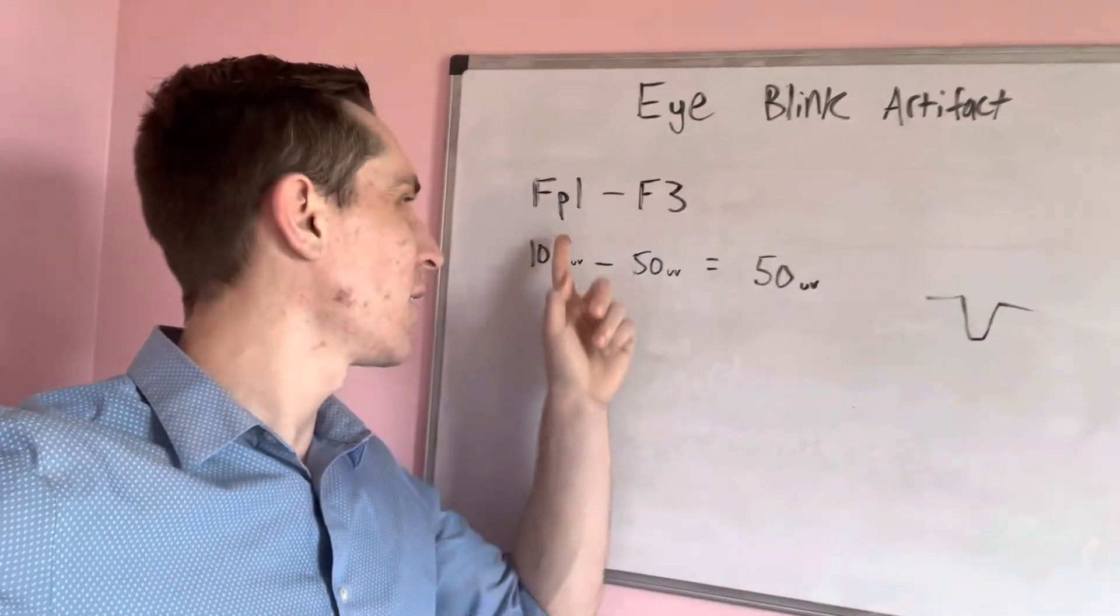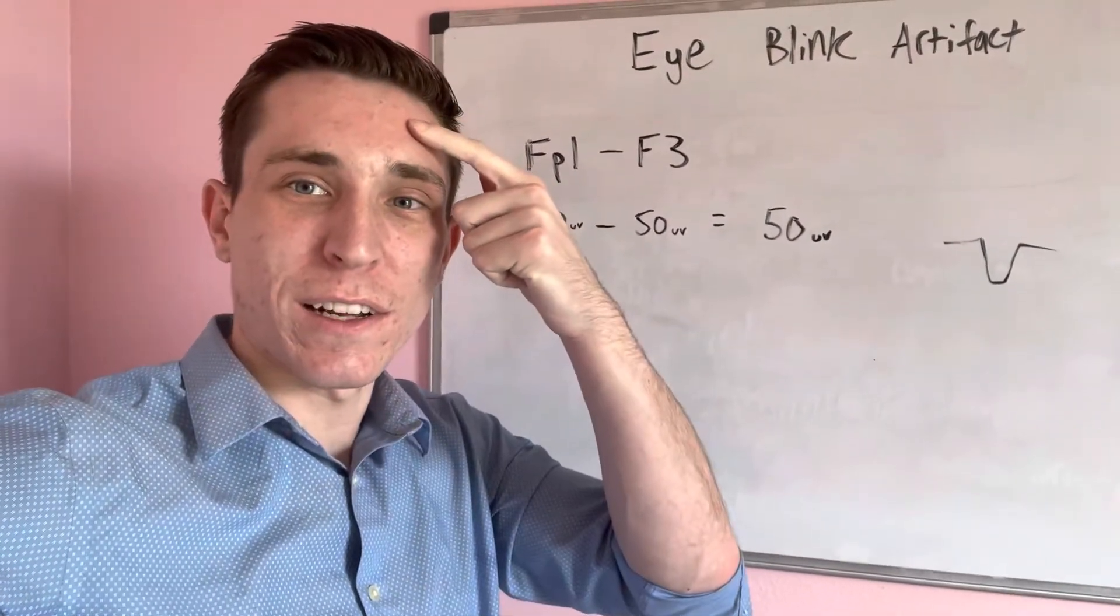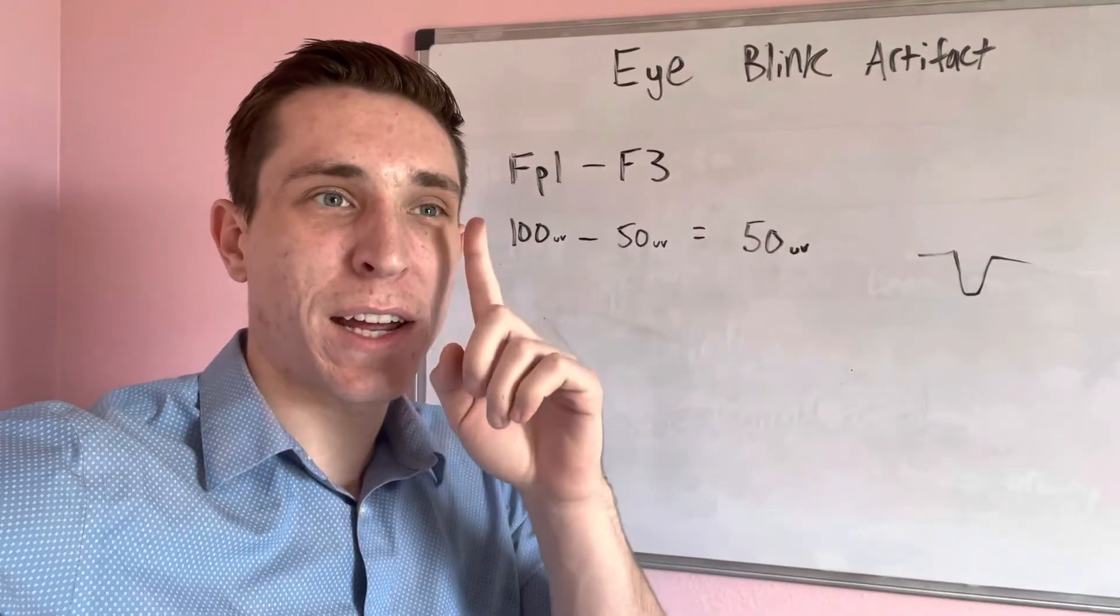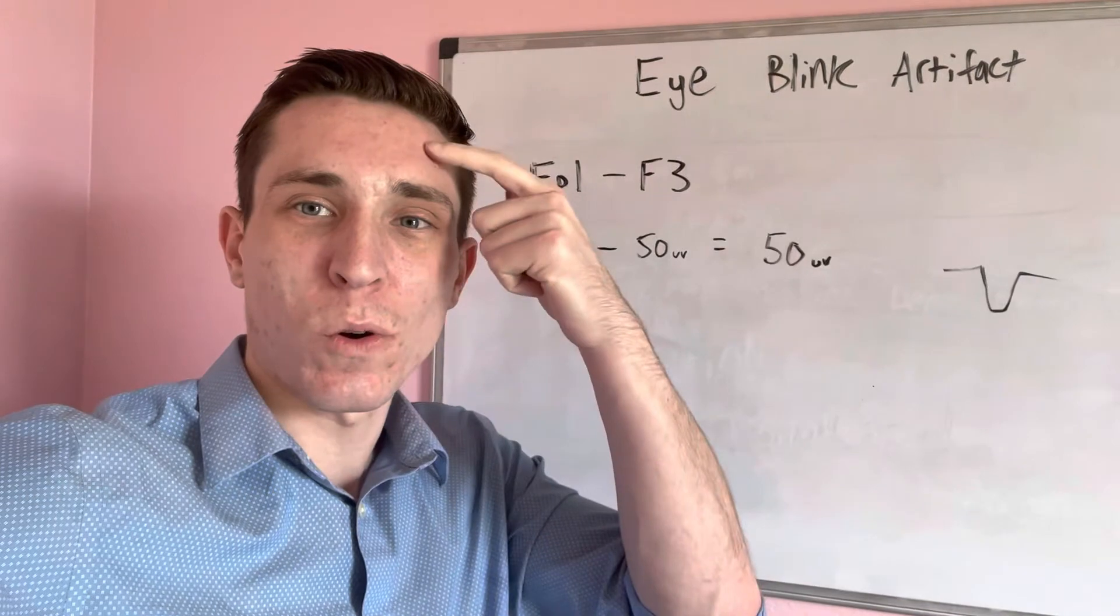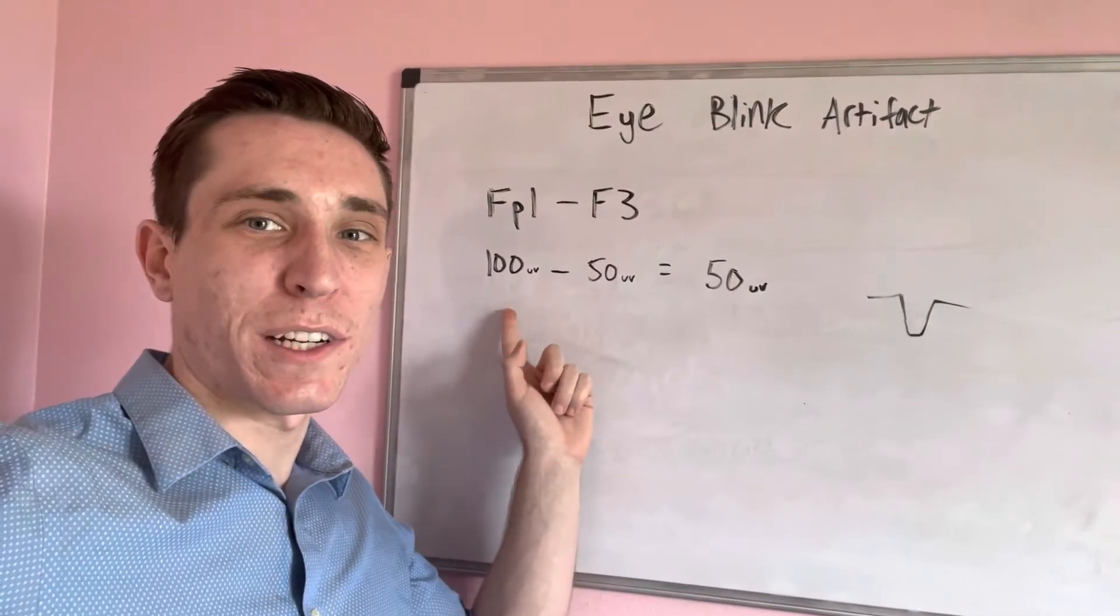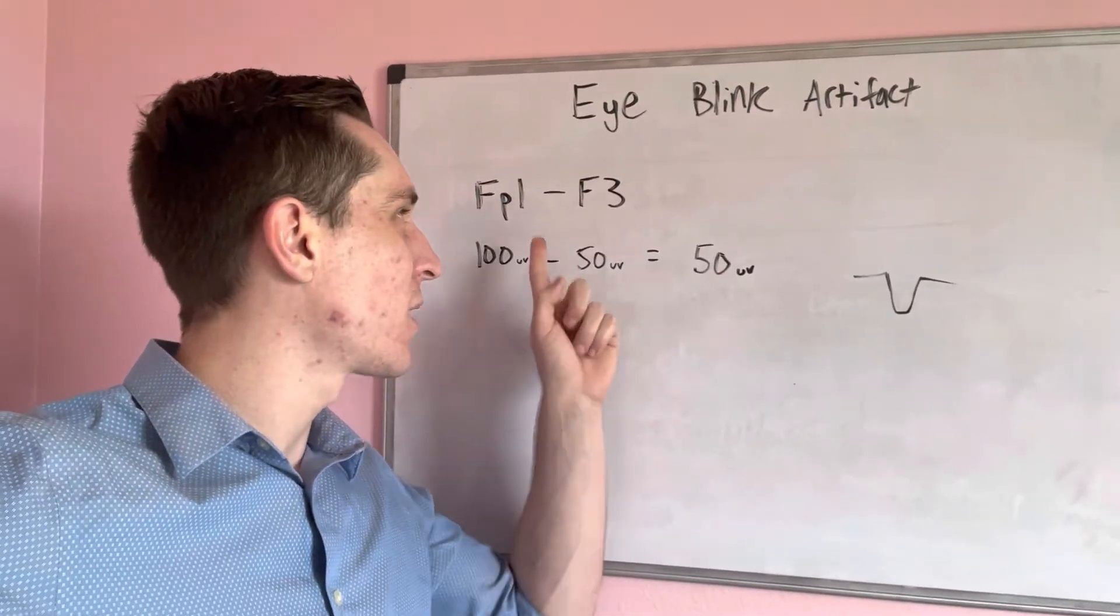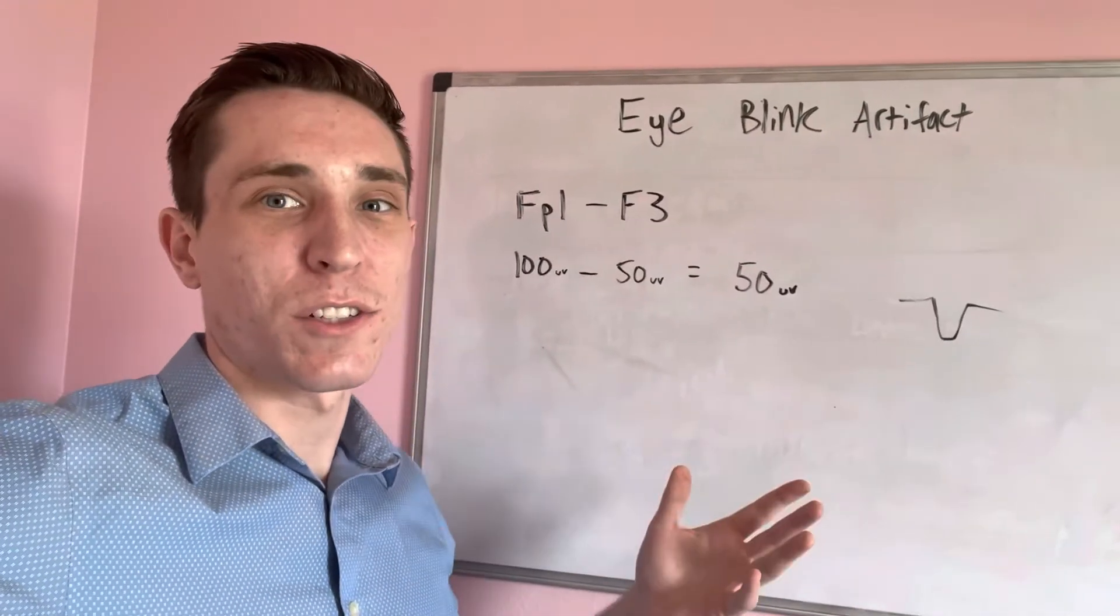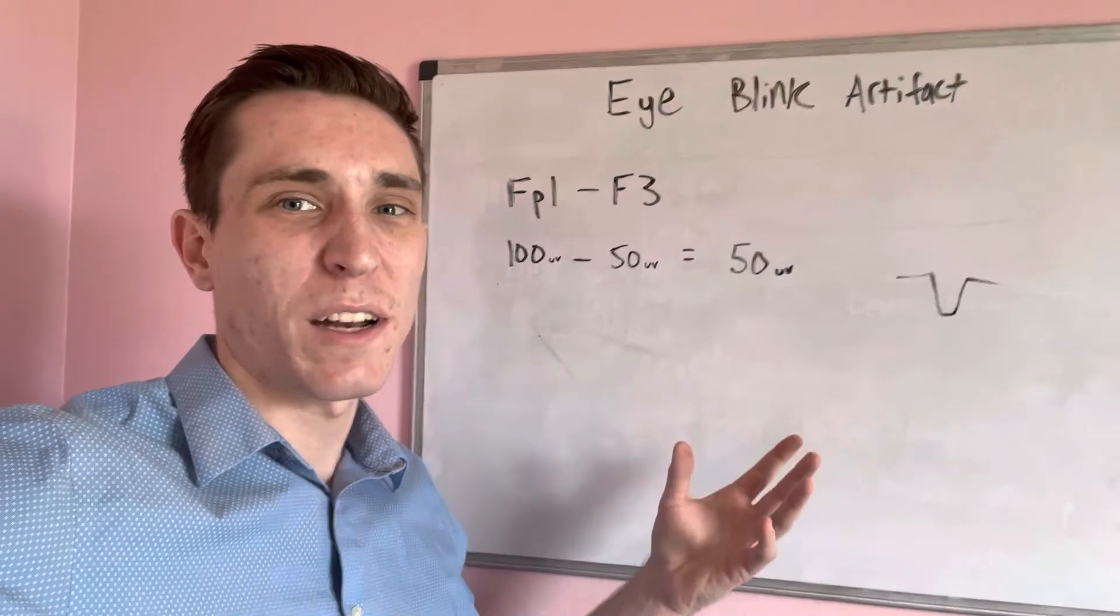FP1 right here is going to pick up the eye blink movement. When you close your eyes, blink your eyes, your eye automatically goes up, points up towards this electrode. So you're going to get a high number here in microvolts. And then that's going to be compared to an electrode like F3 in the longitudinal bipolar montage or double banana montage.